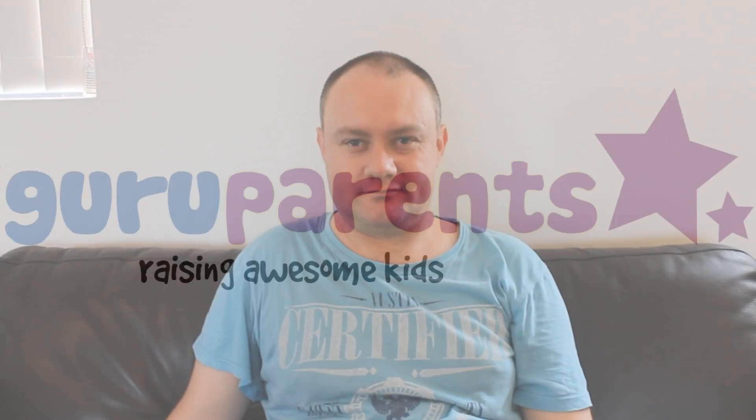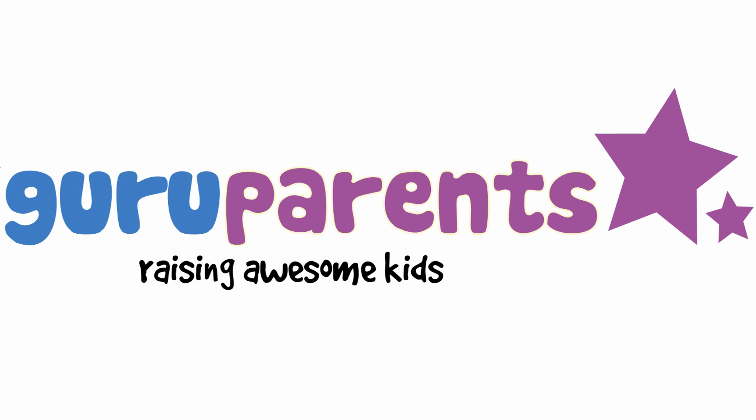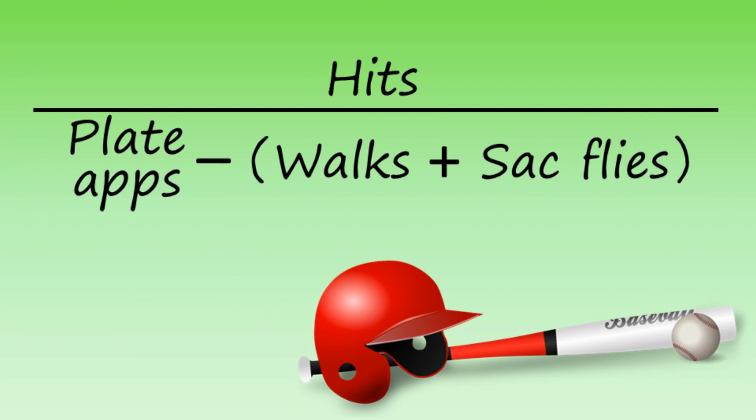If your child likes baseball, batting average is a good thing to teach them about because it contains a lot of important math lessons. Here's a reminder of how it works. This is a slightly simplified formula for batting average. On the top of the fraction is the number of hits, and on the bottom it's the number of plate appearances minus any walks and any sacrifice flies.